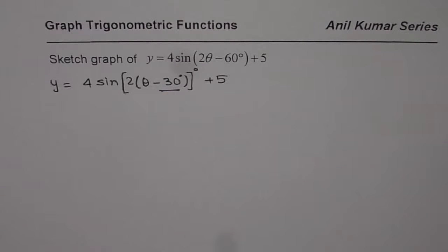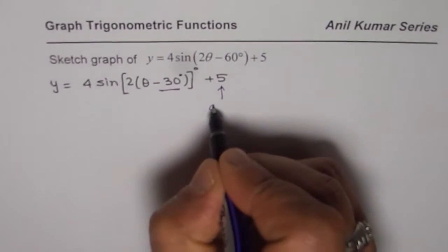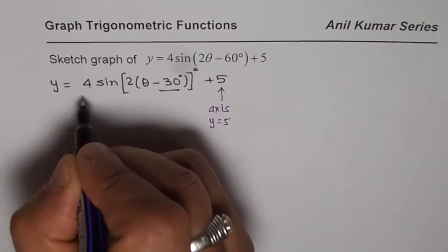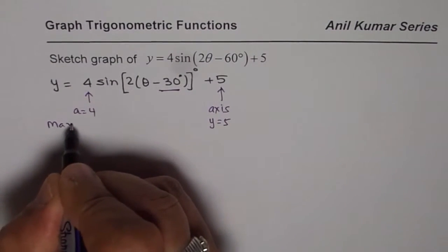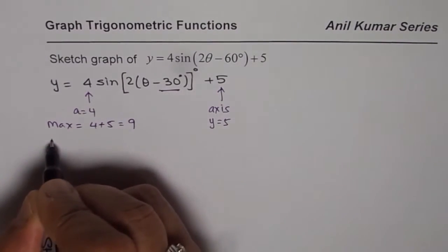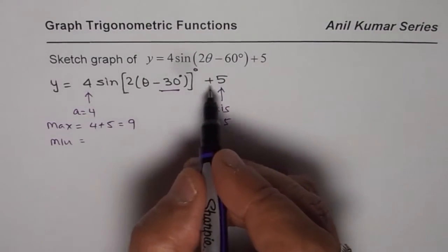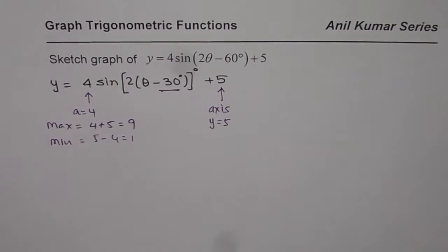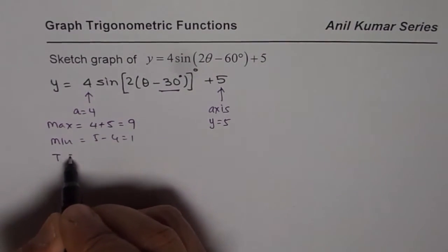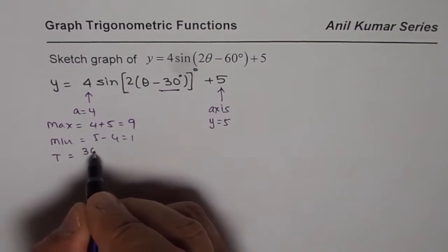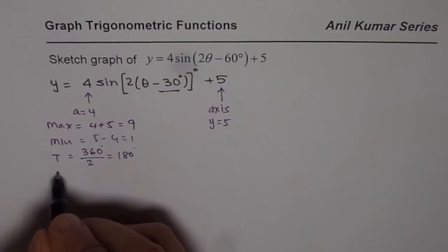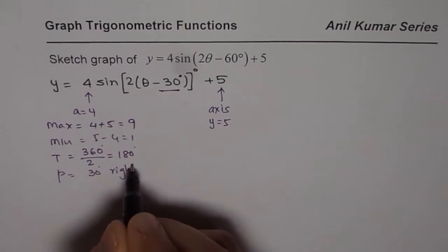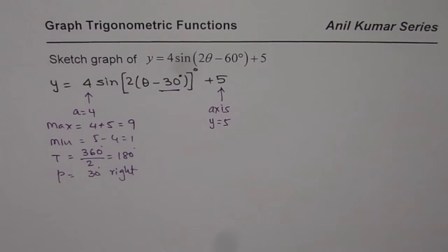First analyze your data. This is the axis y equals 5 and amplitude A is 4. Maximum value is axis plus 4, so we have maximum which is 4 plus 5 equals 9, minimum is 5 minus 4 equals 1. Time period is 360 degrees divided by 2, which is 180 degrees. Phase shift is 30 degrees to right.